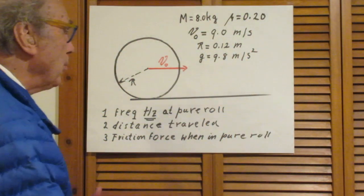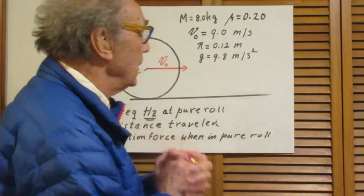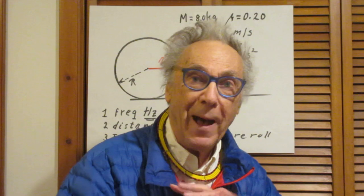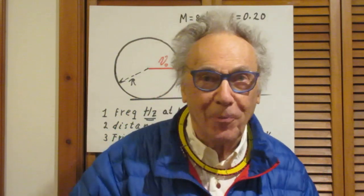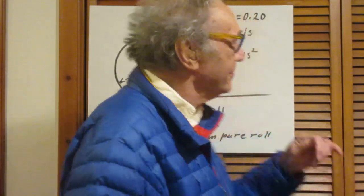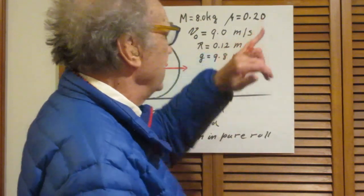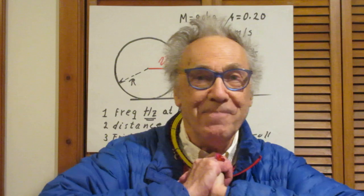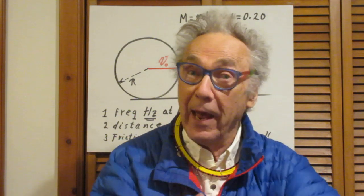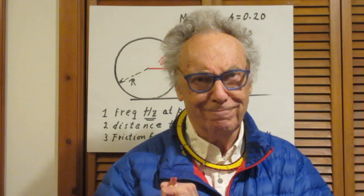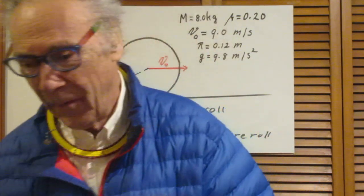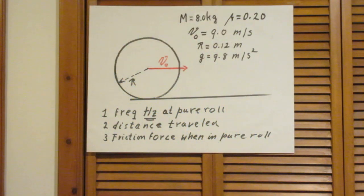We have all the numerical values that you will need. Eight kilograms, by the way, is about the mass of a bowling ball. And when a bowling ball is released — I also looked that up — it's about 20 miles per hour, which is very close to nine meters per second. Have a nice day. Take care. Why shouldn't we be friends? I'd like to be friends.